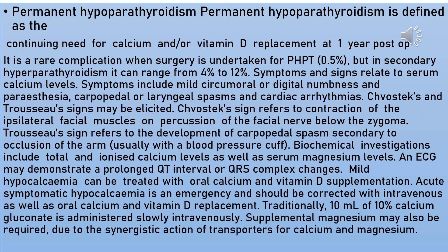Trousseau's sign refers to the development of carpopedal spasm secondary to occlusion of the arm, usually with a blood pressure cuff. Biochemical investigations include total ionized calcium level as well as serum magnesium level. An ECG may demonstrate a prolonged QT interval or QRS changes. Mild hypocalcemia can be treated with oral calcium and vitamin D supplementation. Acute symptomatic hypocalcemia is an emergency and should be corrected with intravenous as well as oral calcium and vitamin D replacement. Traditionally, 10 ml of 10% calcium gluconate is administered slowly IV. Supplemental magnesium may also be required due to the synergistic transport of calcium and magnesium.